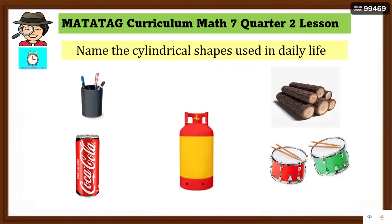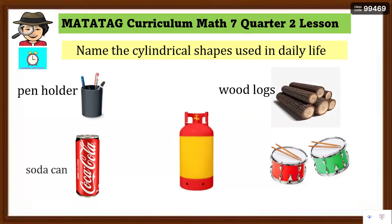So now let's activate your prior knowledge. We have to name the cylindrical shapes used in daily life that we see around us. I'll give you five seconds. Ready? Let's name them. Check — the name for the first picture is pen holder, next is wood logs, the third is soda can, next we have the gas cylinder, and the last one is drum. Tama ba? Okay, perfect!